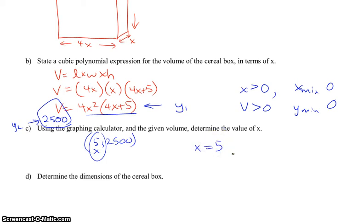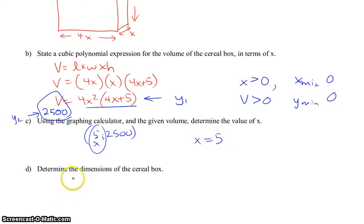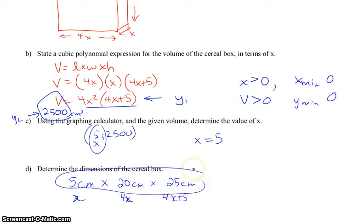The dimensions of the box, therefore, would be 5, and it was centimeters cubed, I believe, for volume. So, 5 centimeters by 4 times 5. So, this was x, and then this would be 4x. So, that would be 20 centimeters, and then, my x's look like multiply, times 4x plus 5 was the height. So, that would be 25 centimeters. And, there we go. That would be our dimensions of the cereal box. Awesome.